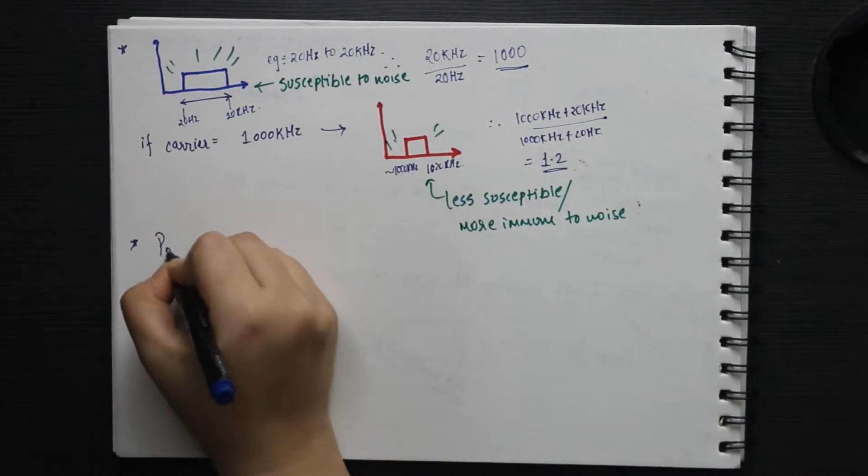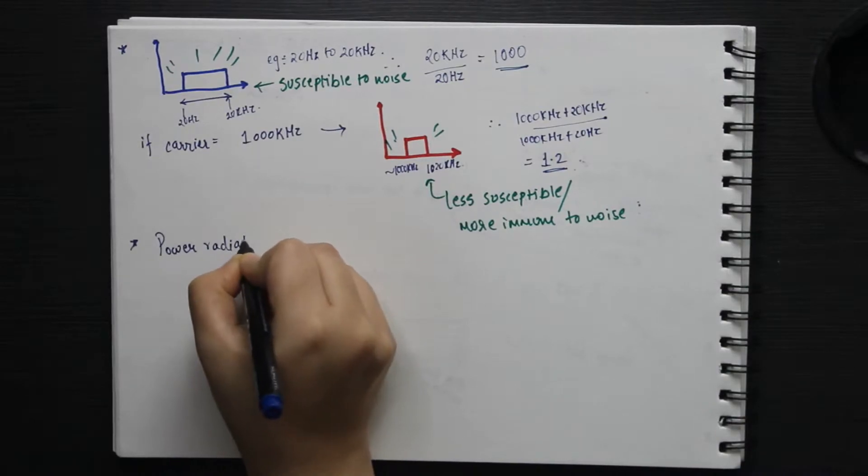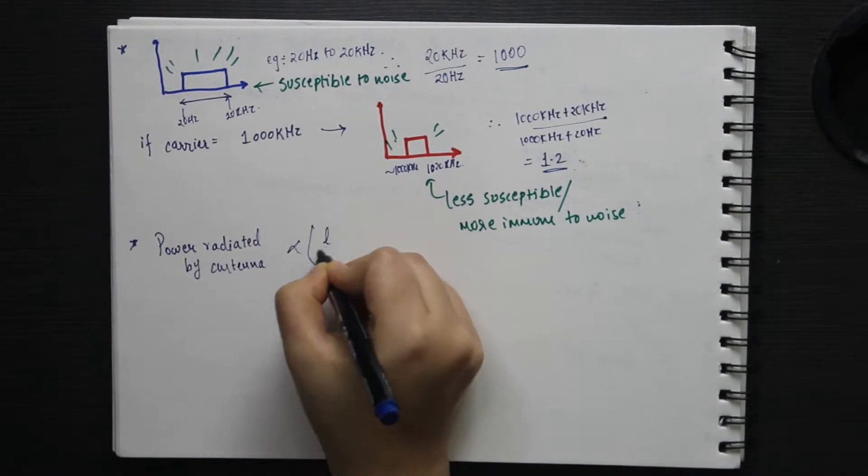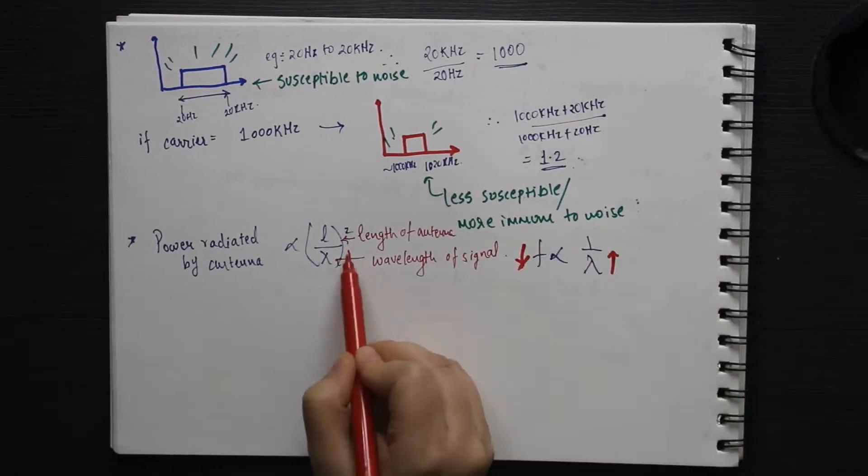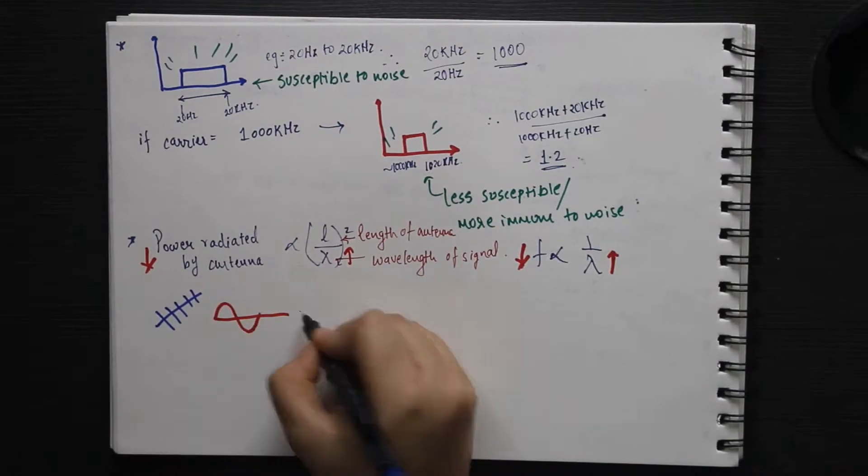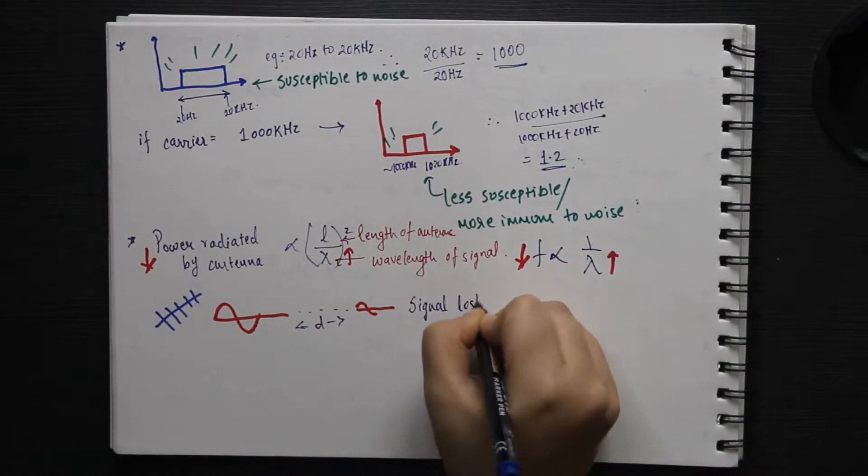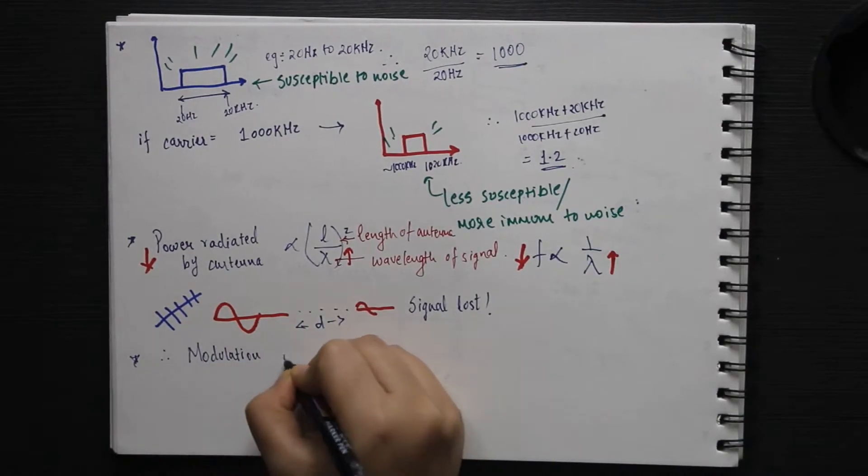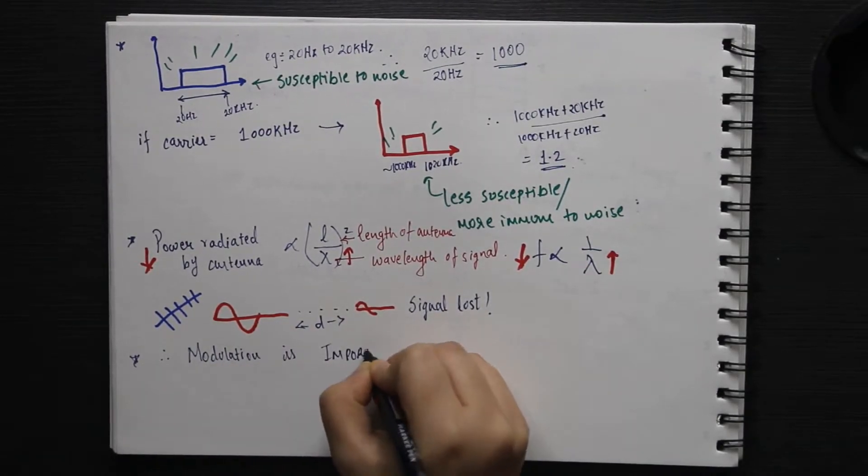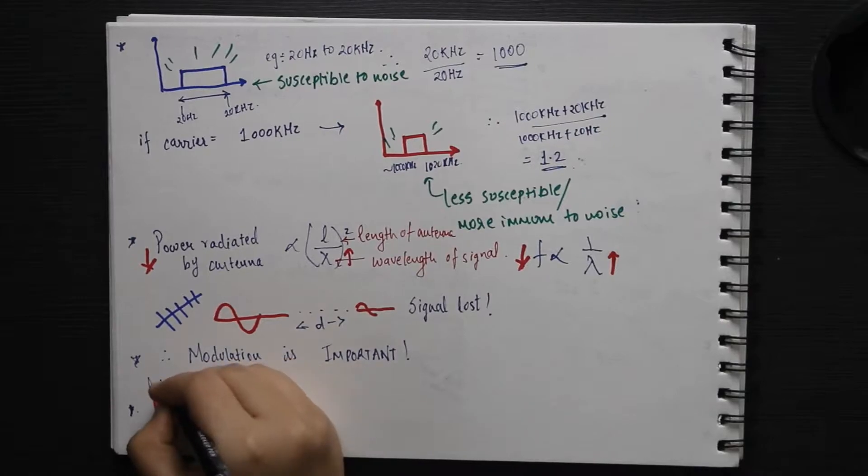The third reason is power radiated by the antenna. It is low for low frequency signal. Thus, this signal may simply get lost after travelling a small distance. Due to all these reasons, modulation is important. You have to use very high frequency signal to transfer your data.